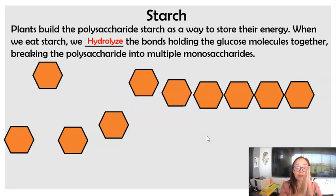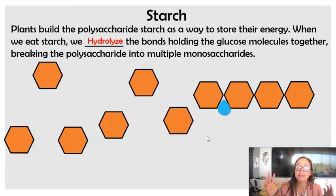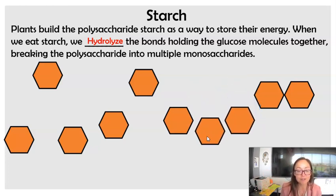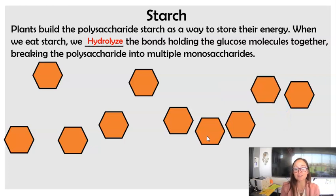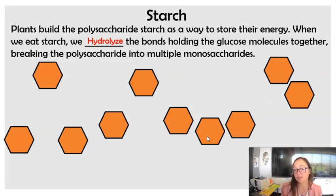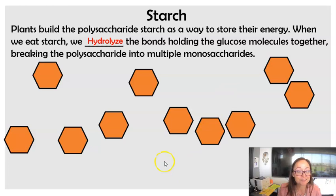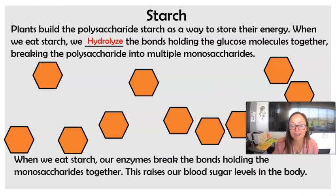the enzymes in our saliva are hydrolyzing. They are adding a water to break the bonds into individual or like short-chain carbohydrates. So here, as we hydrolyze starch, this is one way we as animals who eat starch are able to raise our blood sugar and have a source of energy. So starch can be digested by animals.